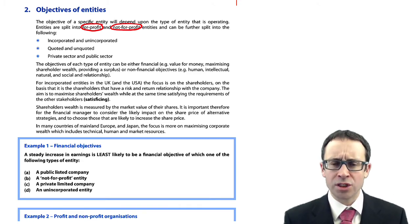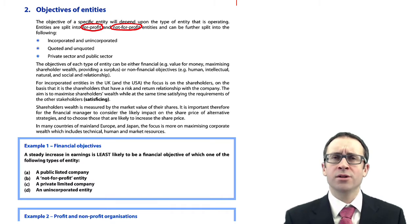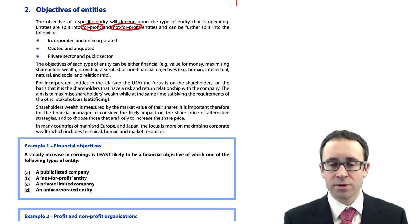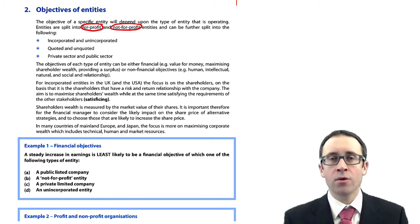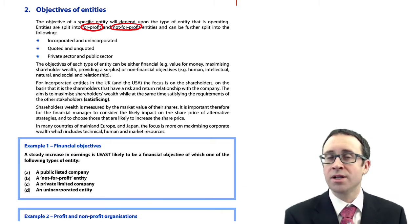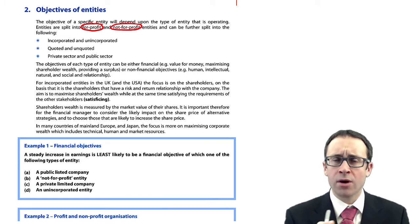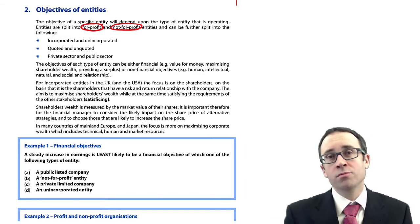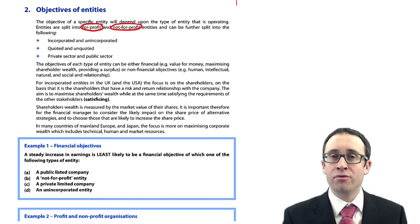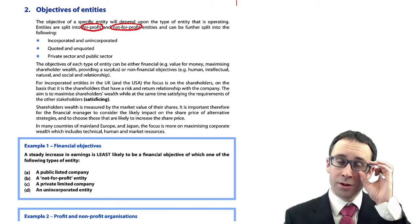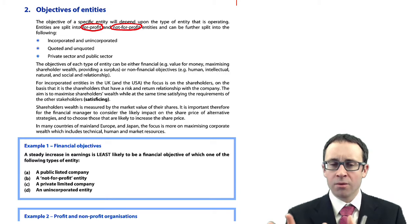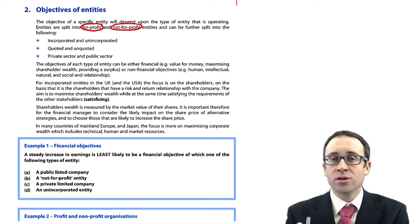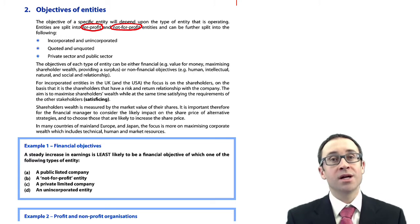Non-financial objectives — we're thinking more along the lines of human, intellectual, natural, and social and relationship factors. In terms of human factors, we're thinking about customer service and how we provide that customer service. Ryanair, a UK low-cost airline, has recently focused on non-financial objectives — much more focused on customer service. That's had benefits elsewhere because more people are now flying with Ryanair, increasing revenues, profits, and share price.